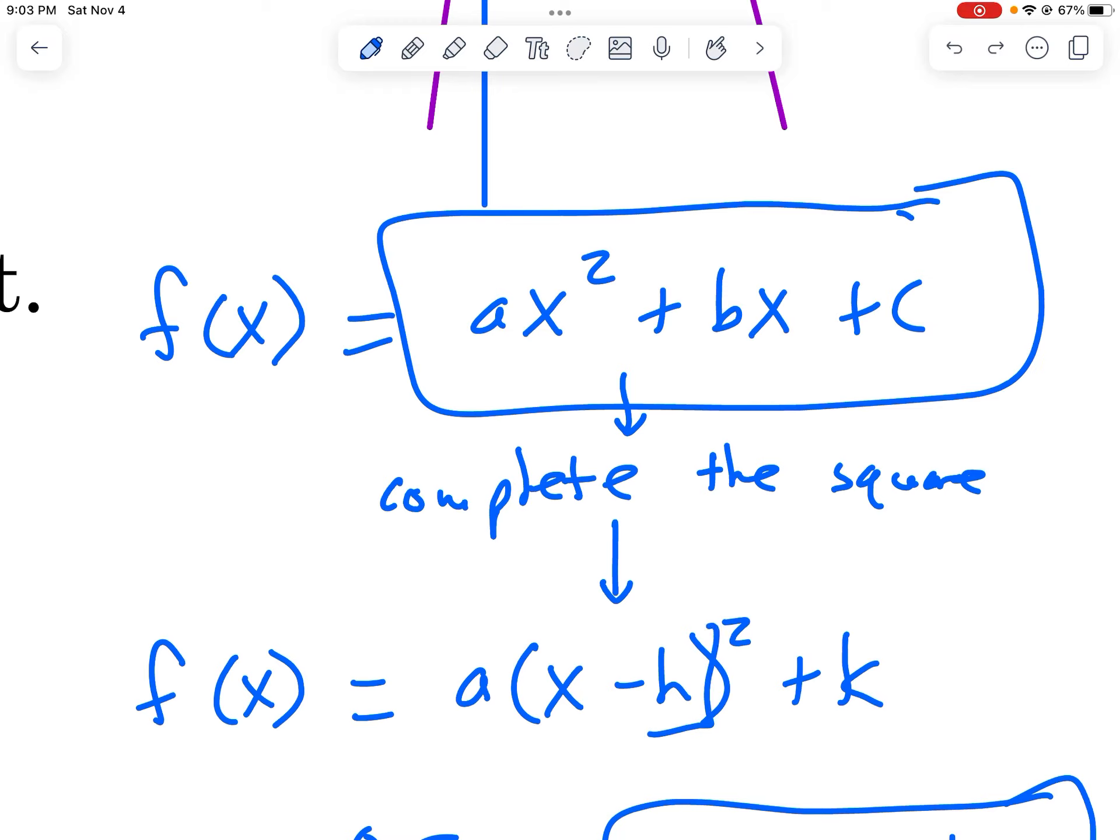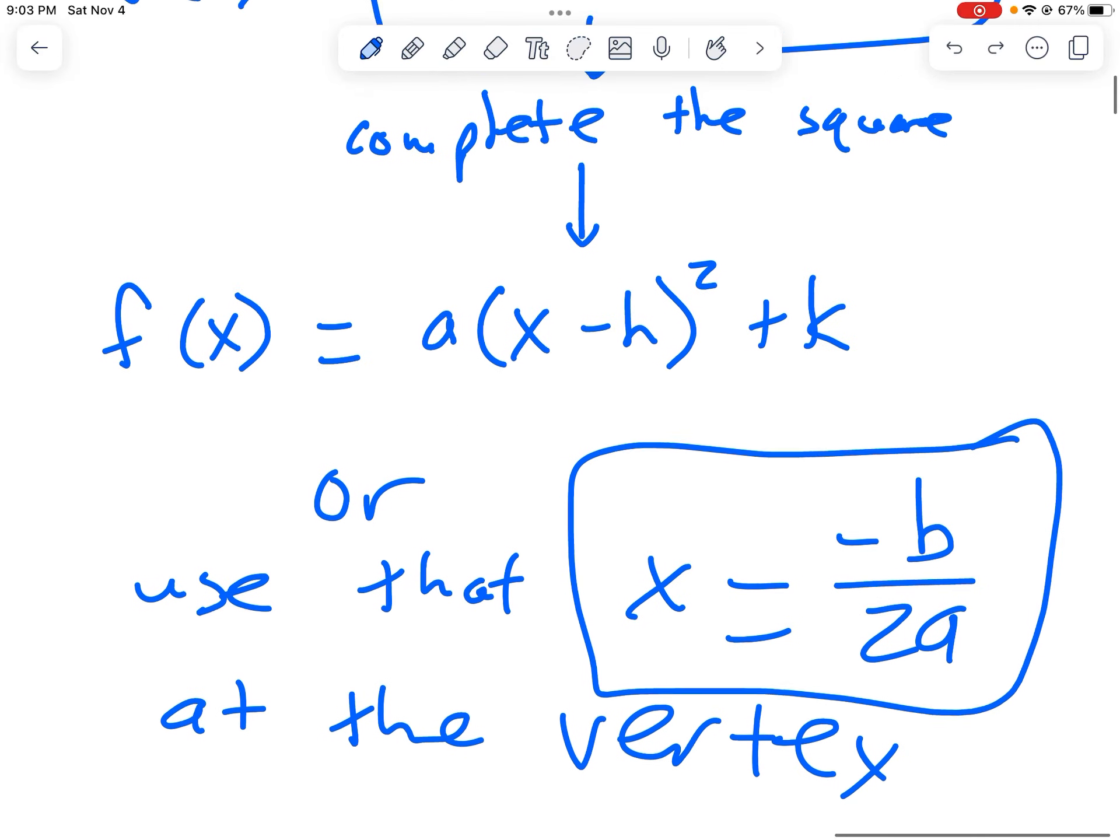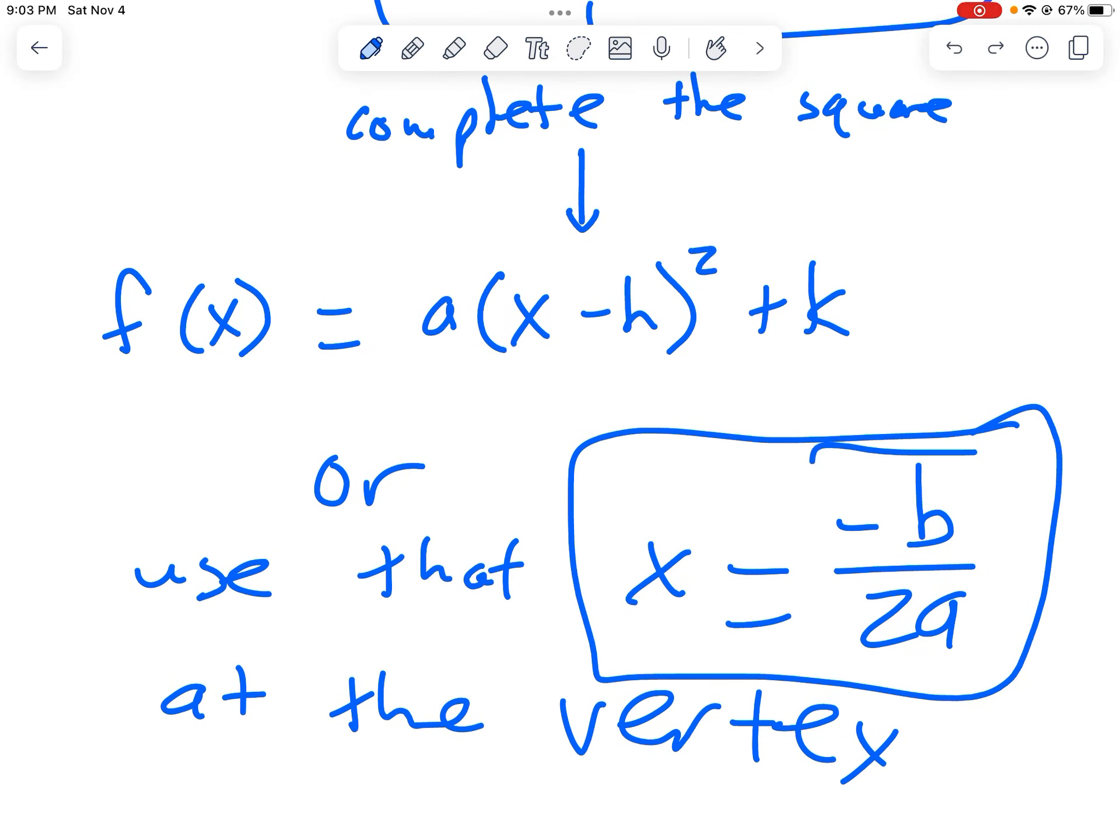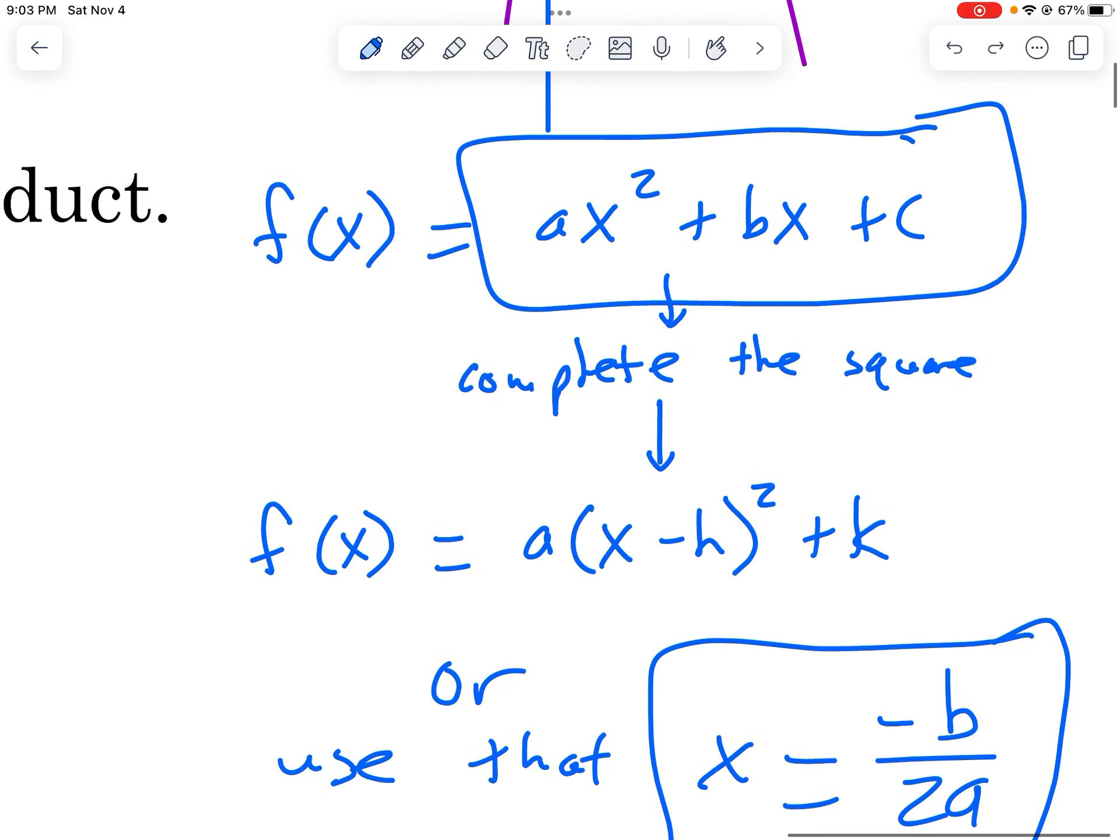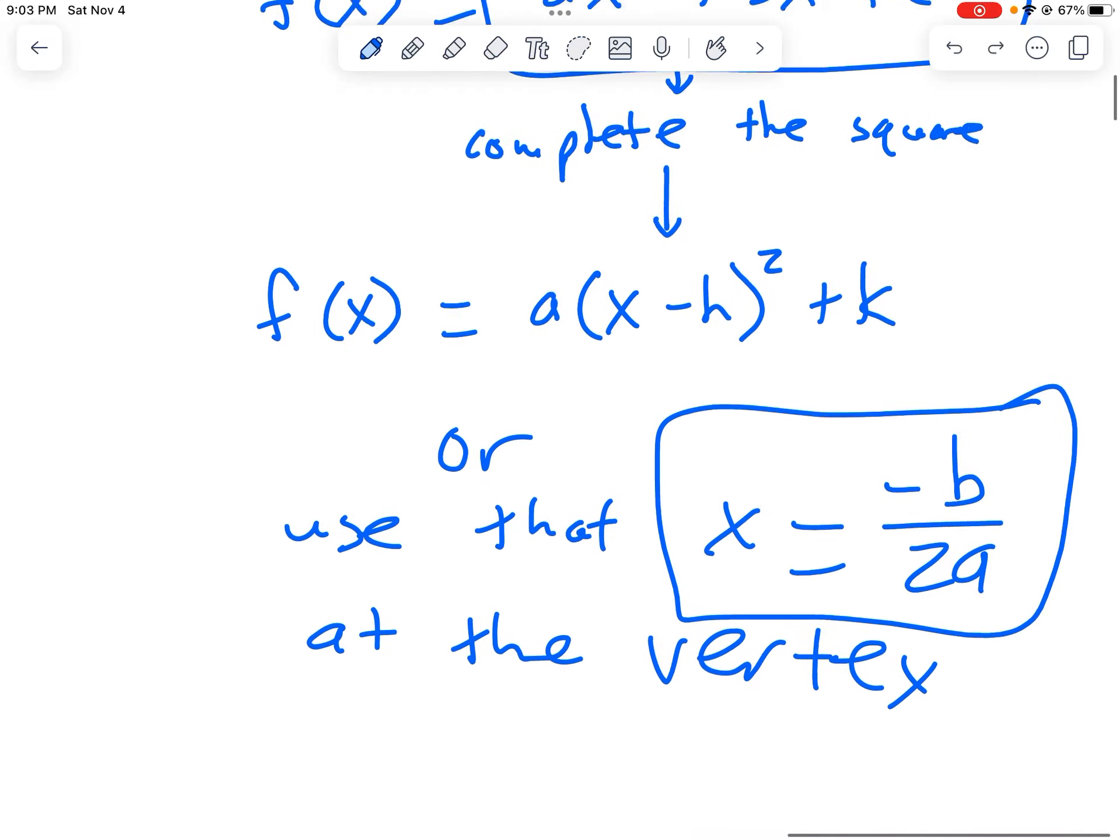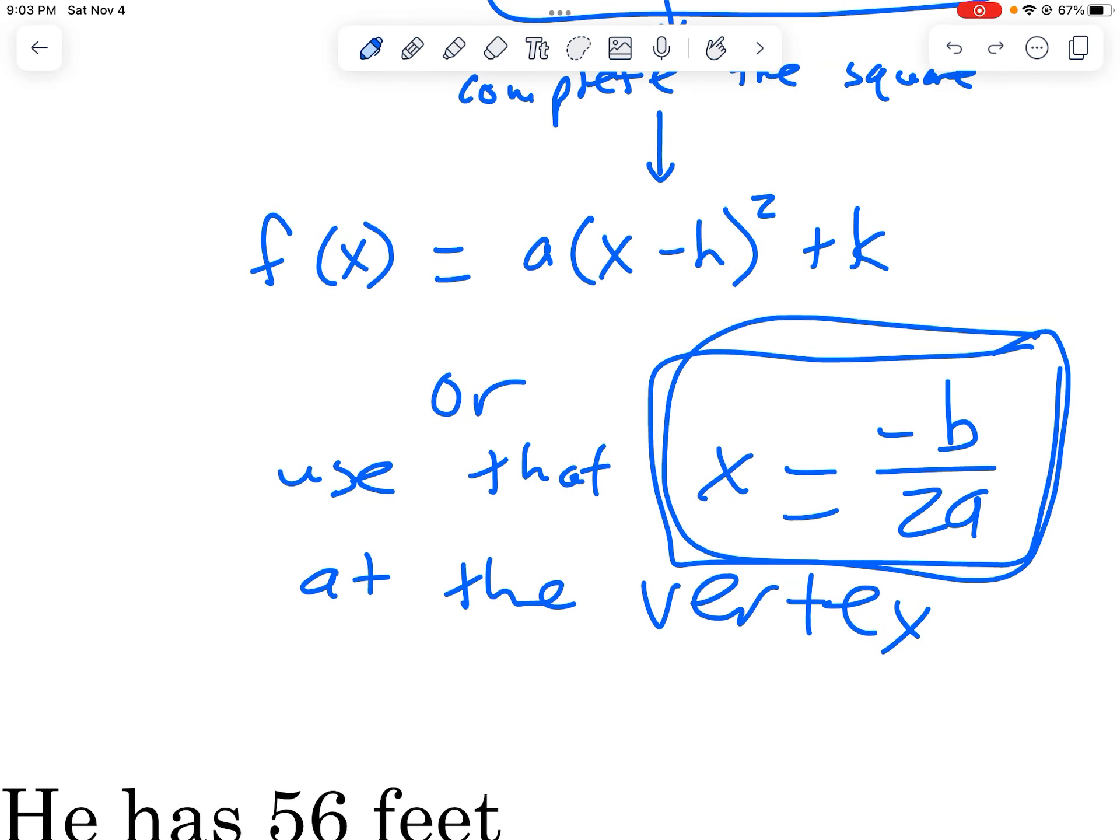If you do a little bit of work on this equation and you don't put numbers in and you convert it into vertex form, you find out that this h value is actually just going to be negative b over 2a. And so if you just have your quadratic in standard form, you can skip the completing the square process and writing it in vertex form and just use this to get the x-coordinate of the vertex. The x-coordinate at the vertex is negative b over 2a.